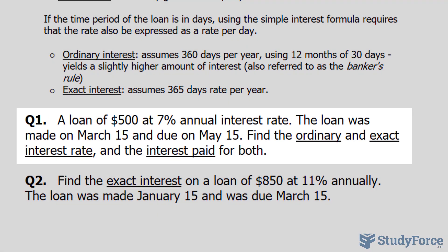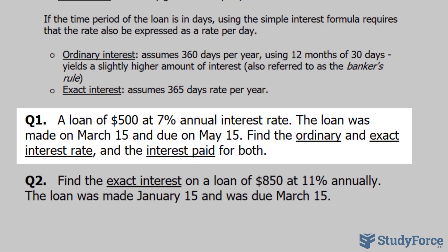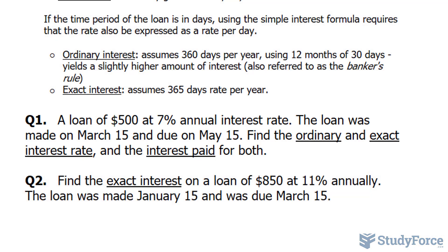In question number one, we are told that a loan of $500 at 7% annual interest is given. The loan was made on March 15 and due on May 15. Find the ordinary and exact interest rate and the interest paid for both.